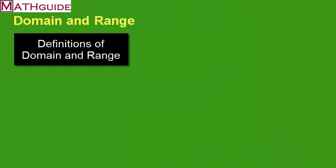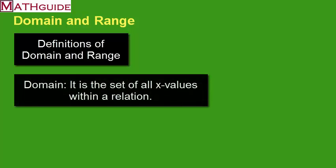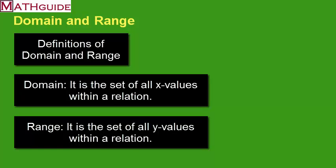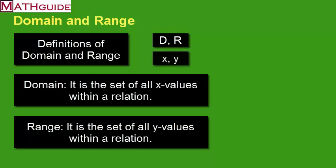The definition of domain is the set of all x values within a relation. The definition of range is the set of all y values within a relation. An easy way to remember: d and r are in alphabetical order, and x and y are in alphabetical order. So if you line up d with x and r with y, the d goes with the x and the r goes with the y. That makes domain and range problems a little easier.